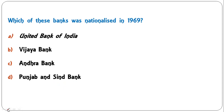Which of these banks was nationalized in 1969? Options are United Bank of India, Vijaya Bank, Andhra Bank, or Punjab and Sindh Bank. In 1969, 14 banks were nationalized, and United Bank of India was one of them. Vijaya Bank, Andhra Bank, and Punjab and Sindh Bank were nationalized in 1980, in the second wave of nationalization. So A is the correct answer.